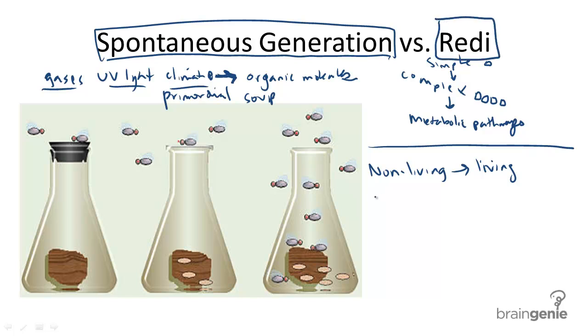He's an Italian scientist, who in 1668 disproved the idea that flies could spontaneously transform from rotting meat, as would be suggested by a theory of spontaneous generation.